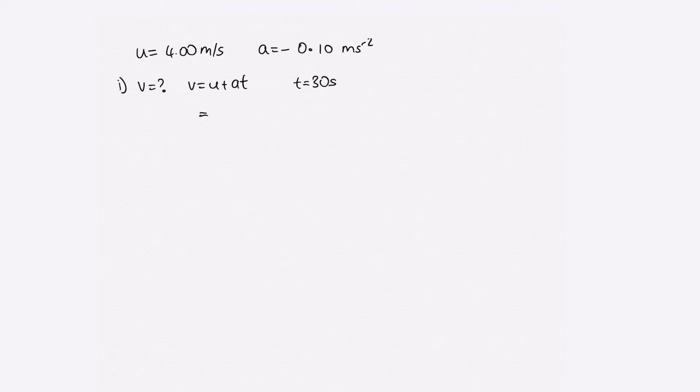Now we just have to substitute in. So we've got 4, and now a, that's minus 0.10 times 30. So this is equal to 4 minus 3. So that's equal to 1 meter per second.